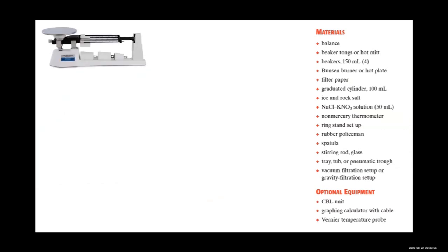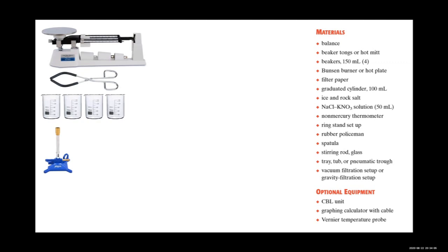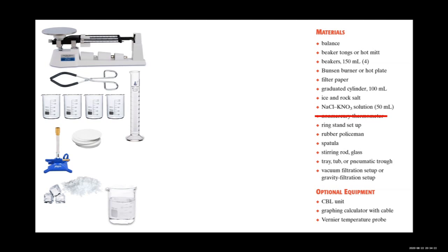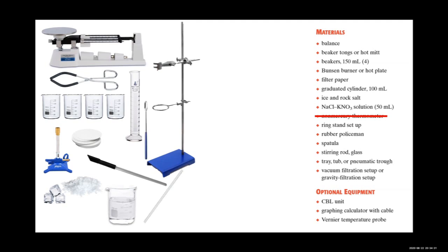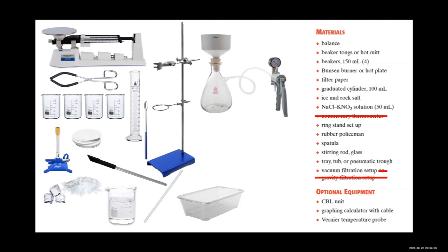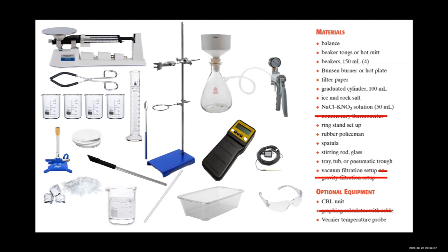Materials needed: beaker tongs or hot mitt, beakers of 150 mL, Bunsen burner or hot plate, filter paper, 100 mL graduated cylinder, ice and rock salt, sodium chloride and potassium nitrate solution (about 50 mL), non-mercury thermometer or CBL unit with Vernier temperature probe, ring stand setup, rubber policeman, spatula, glass stirring rod, and a vacuum filtration setup or gravity filtration setup. In this case we used a vacuum filtration setup. Don't forget your eye protection.